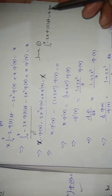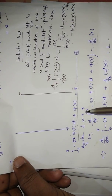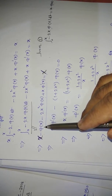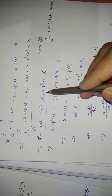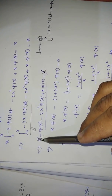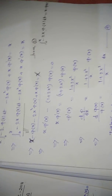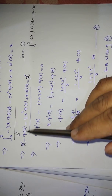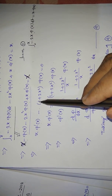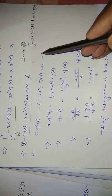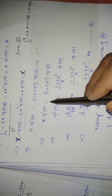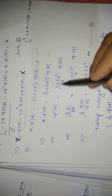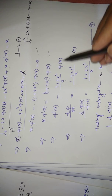Substituting from equation (2): x·[−2φ(t) dt integral] equals x − φ(x). After simplification, x cancels, and we get: x·φ'(x) − (1 + 2x²)φ(x) = 0, which rearranges to φ'(x) = [(1 + 2x²)/x]·φ(x). This is equation (4).